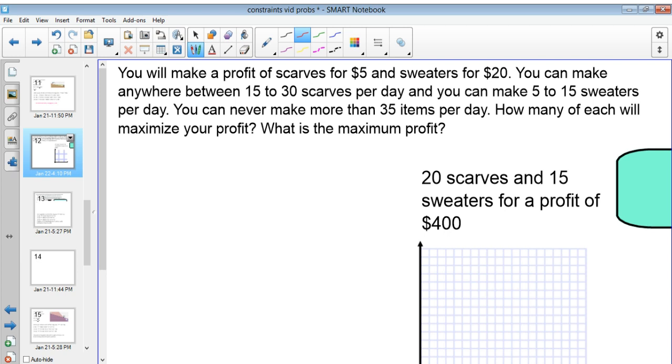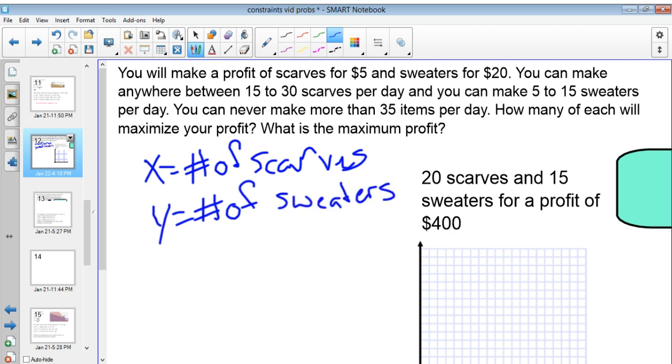So here the first thing we need to do with any of these problems is define our variables. So I, because scarves came first, I'm going to let X equal the number of scarves, and then I'm going to have Y equal the number of sweaters. And in that first sentence, we already know it says the word profit, so I know that's going to be my profit function. I know P is going to be equal to 5X, because $5 per scarf, plus 20Y.